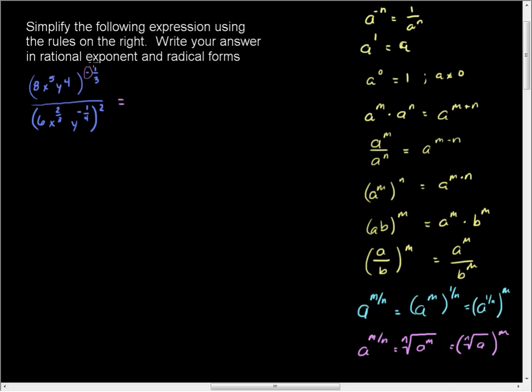So I'm going to distribute this negative one-third, and that gets distributed to each of the exponents in the top. And so I really have 8 to the negative one-third times x to the negative five-thirds times y to the negative four-thirds.